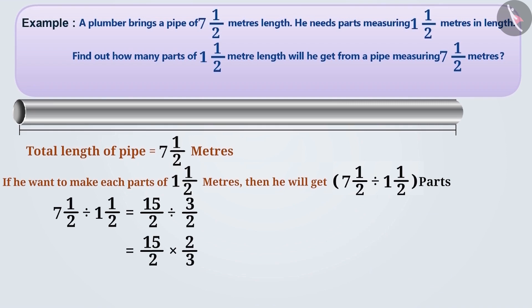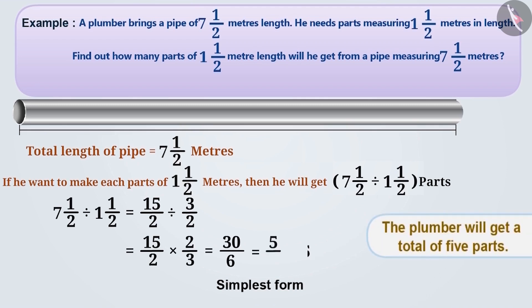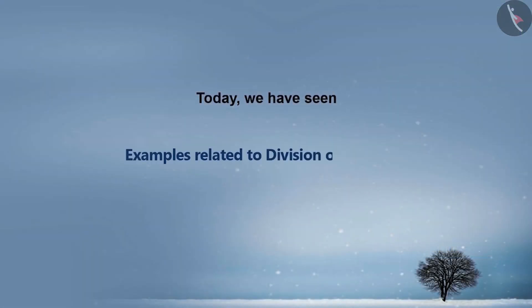To solve this, we will first multiply the numerators and the resultant numerator will be thirty. We will then multiply the denominators and the resultant denominator will be six. Then we simplify it. If we divide the numerator by the denominator, we get the simplest form as five by one, that is five. So we can say that the plumber will get five parts in total. Today we have seen some examples related to division of fractions. In the next video, we will see some misconceptions and common mistakes related to division of fractions.